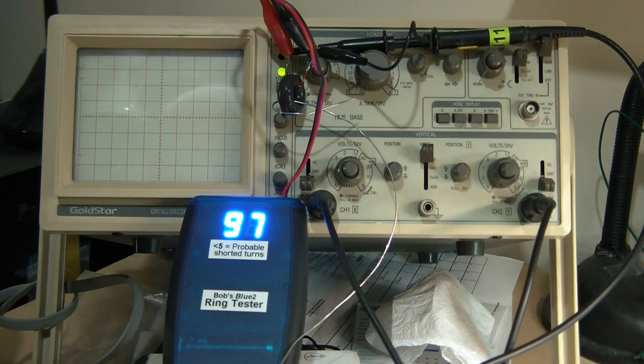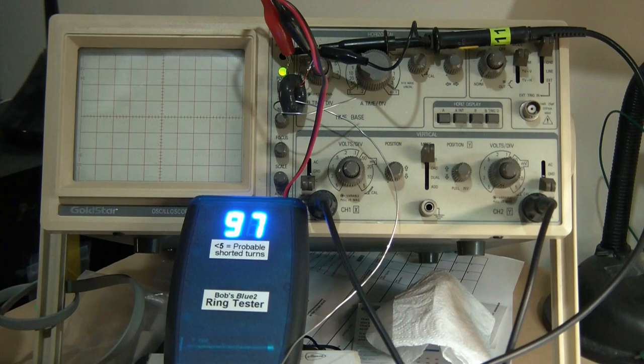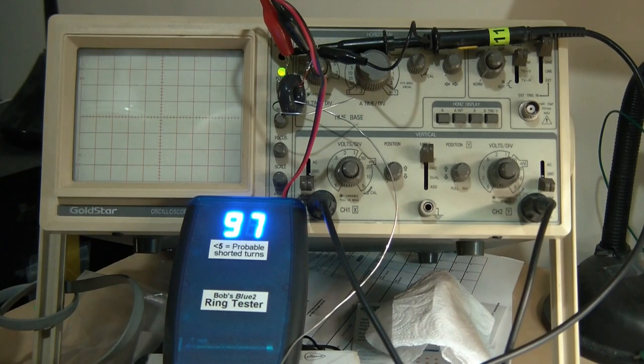Okay, the first thing to show you is how it works, or the principle it works on. Here we have my old Gold Star Oscilloscope, and the tester here. This one doesn't have a row of LEDs, it's got a digital display.